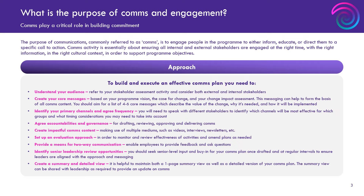Your core messages. I would always advise for any change program to articulate up front four to five really key messages that describe what the change program is, how it's going to be delivered, what the outcomes are, the overall impact, etc. Keep those so that you can keep threading them through different communications. That allows you to be really consistent with your messaging, and it also means that if you've got several people sending out messages, you're all being consistent with how you're articulating the program. You don't want one person calling it something else and talking about different outcomes to something you've written in the latest email. Get those core messages down on paper and give them out to whoever's relevant in the change team or other stakeholders so they can be weaved into all your messaging.